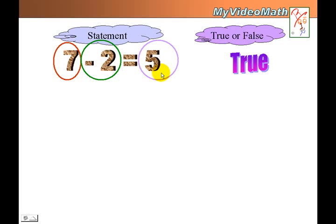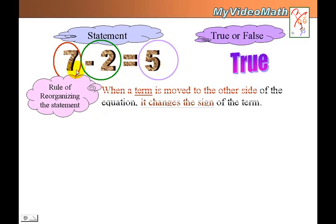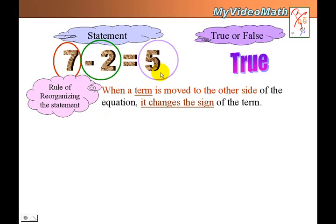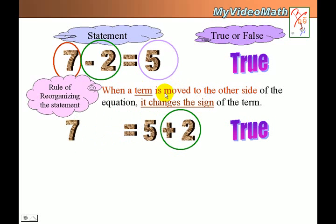Inside this statement, if I want to reorganize the three entities, there is a rule I need to follow. Each entity we call a term. When a term is moved to the other side of the equation, the sign of the term changes. For example, if I move the negative 2 to the other side, I need to change the sign — negative 2 becomes positive 2.